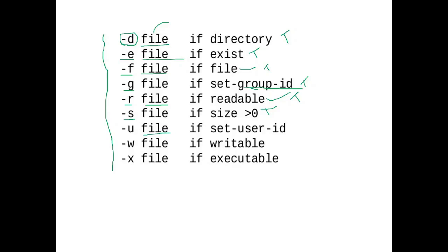To check if a file has a user ID set, use hyphen-u (-u); if true it returns true, otherwise false. To check whether the file has write permission, use hyphen-w (-w); if the file has write permission it returns true, otherwise false. To check whether the file has execute permission, use hyphen-x (-x); if it does it returns true, otherwise false.